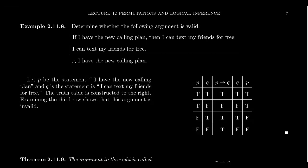Consider the following argument: if I have the new calling plan, then I can text my friends for free. Now, if anyone is watching this and wondering — was there ever a time you couldn't text for free? Yes, back in the stone age, when cell phones first came out, they didn't necessarily have free texting. It was an add-on feature; they charged you by the text. Texting wasn't necessarily included in the plan.